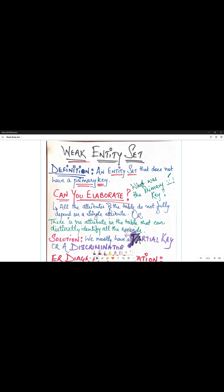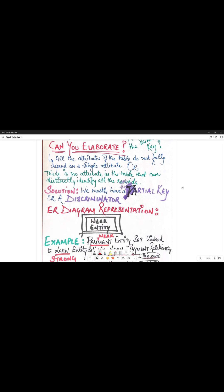Coming to the solution, then how do we identify the records in a weak entity set? We mostly have a partial key or a discriminator which is connected to the primary key of the strong entity set, and that's how we identify different records in a weak entity.